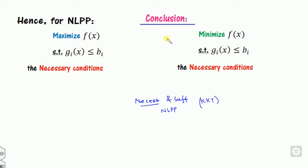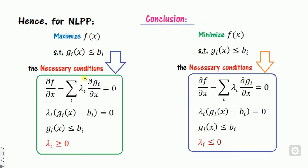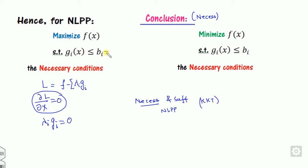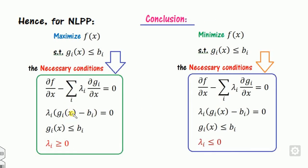We will summarize this before starting the lecture. This is the conclusion for the necessary condition. For either maximization or minimization problems, the necessary conditions are: define the Lagrange function L as f minus lambda times g_i, then find the partial derivatives set to 0, lambda_i times g_i equals 0, and g_i written as g minus b is greater than or equal to 0. Since the problem is maximization, lambda must be greater than 0; for minimization, lambda is less than 0.